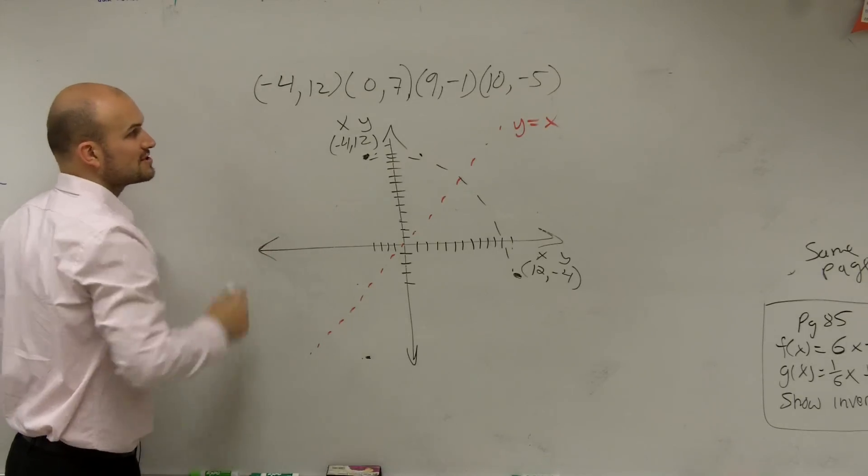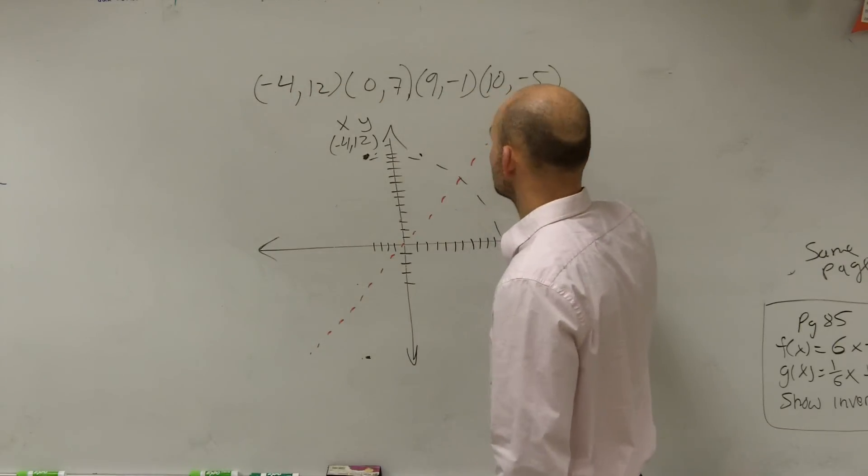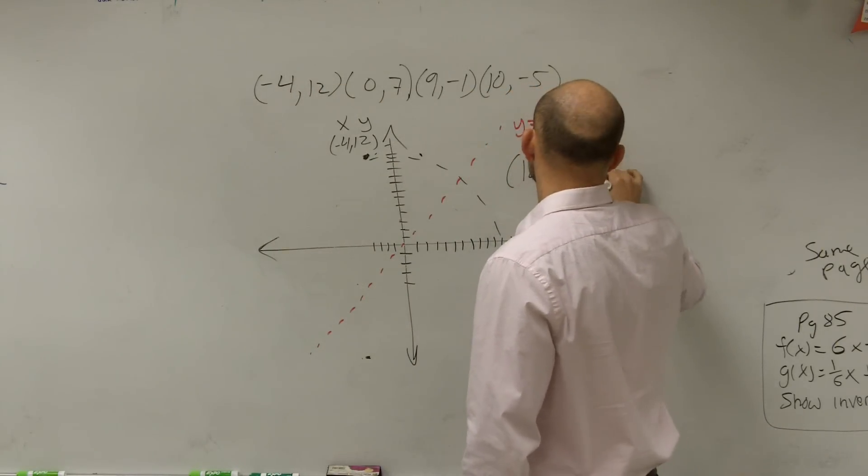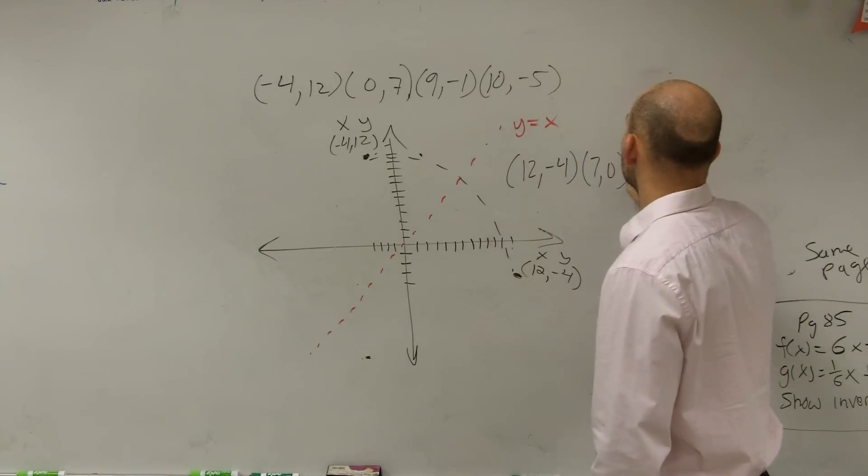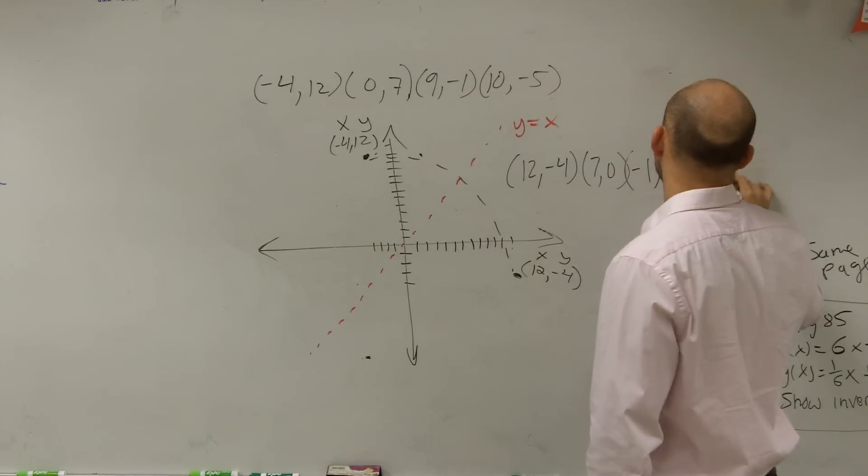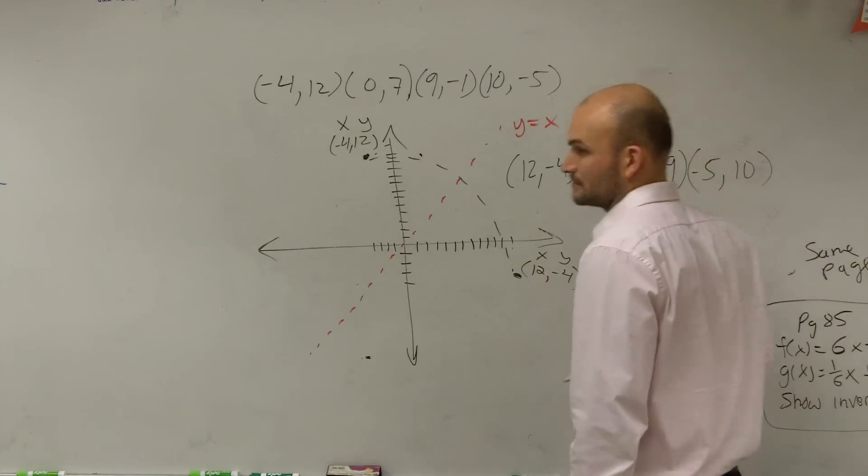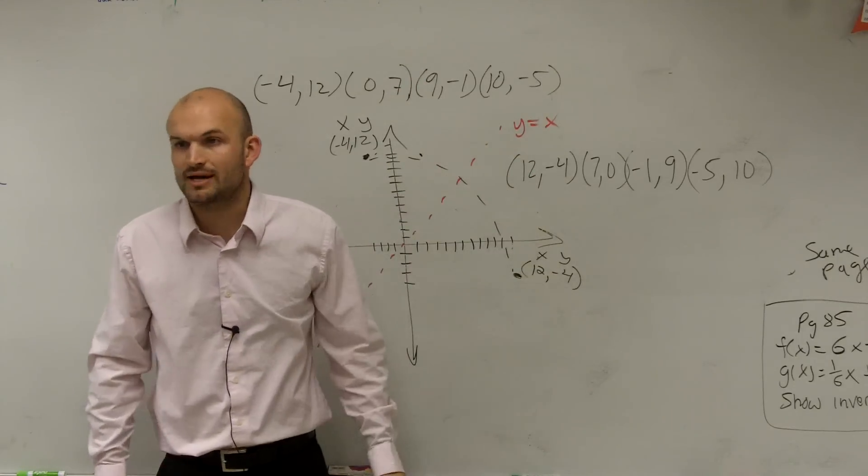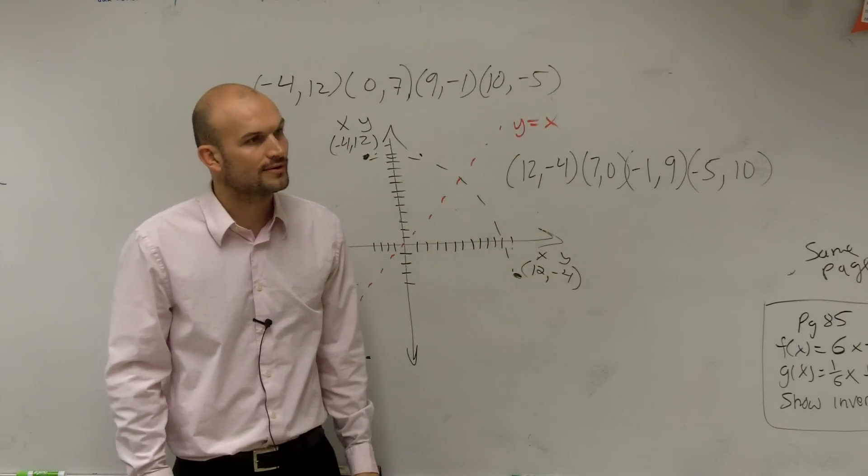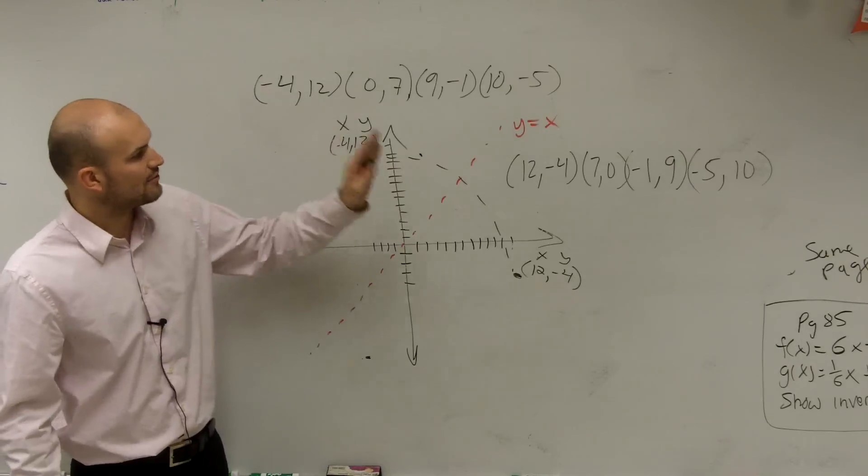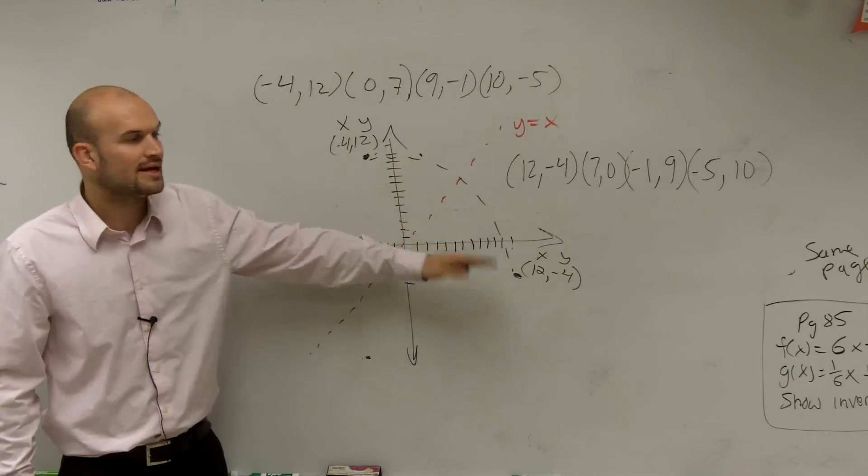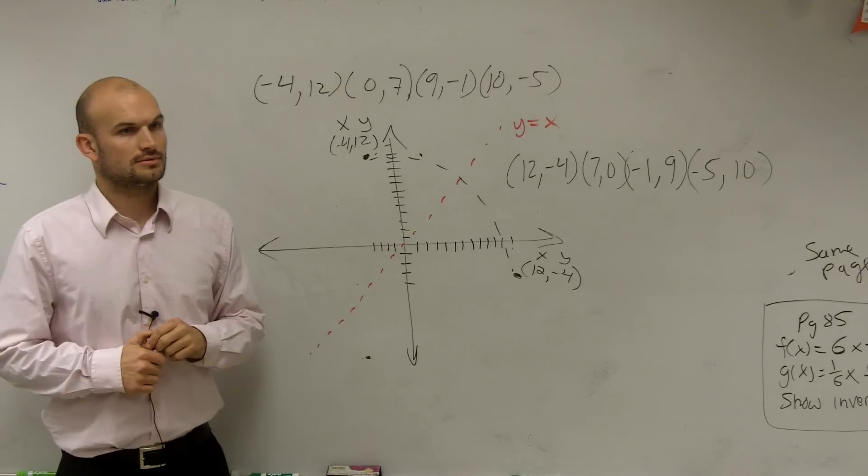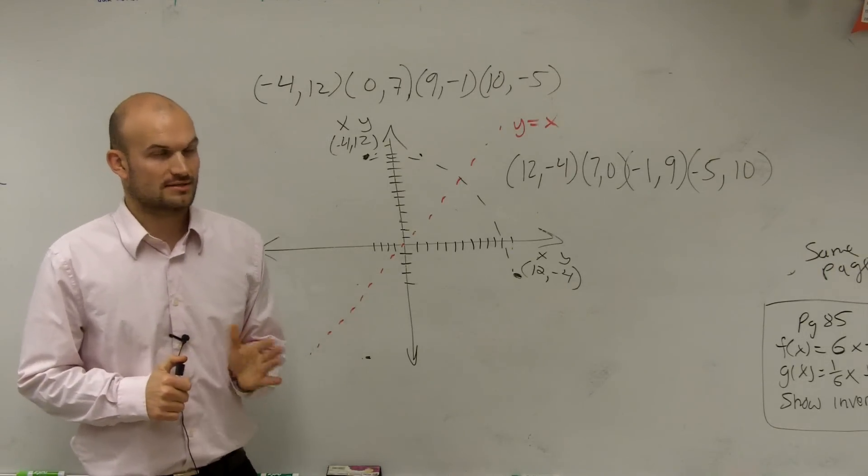So if here's my relation or my function, and I say, what is the inverse of it? Well, all I'm going to do is just plot in my new points. (12, -4), (7, 0), (-1, 9), and (-5, 10). So if this is my function or relation, the inverse is just going to be the x and y intercepts switched over. Because what that does is that reflects it. When you switch them, it reflects it over the xy line, or the yx line. OK? y equals x line, whatever.